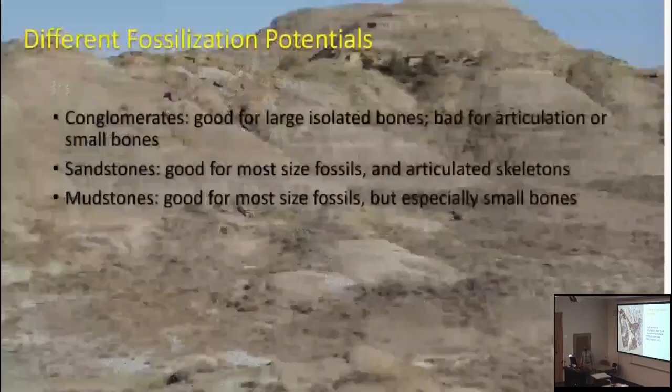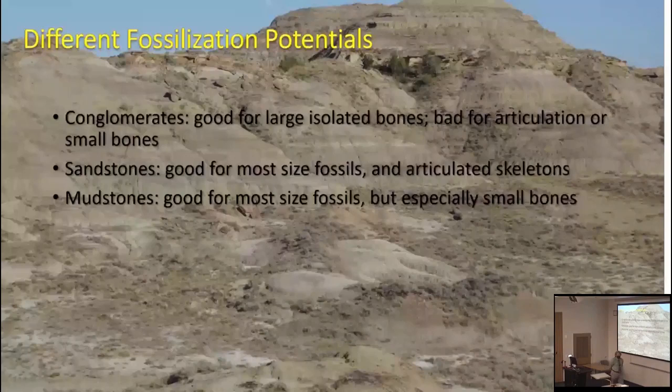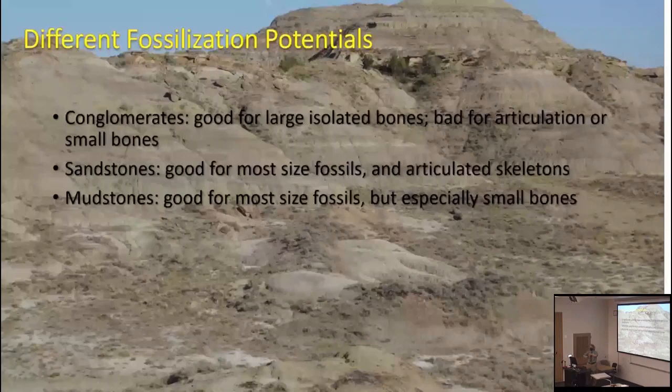Different types of sedimentary rocks have different fossilization potential, because every rock is a record of the environment in which it formed, including the energy of that environment. If you're digging in a conglomerate — those rocks with very large pebbles and cobbles — that might be good for individual large isolated bones, but it's a very high-energy environment, so it's unlikely you'll find things in articulation. The water was moving so fast it likely tore bodies apart, and it's also very bad for preserving small bones, because they get smashed up by the rolling pebbles and cobbles.